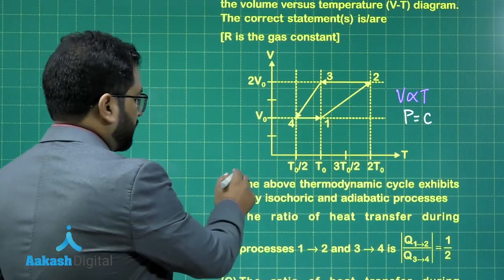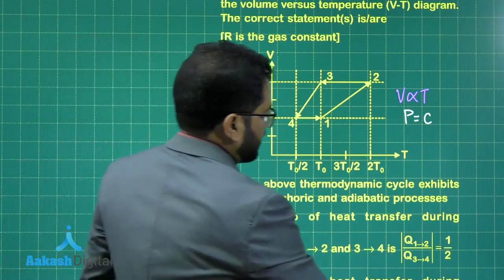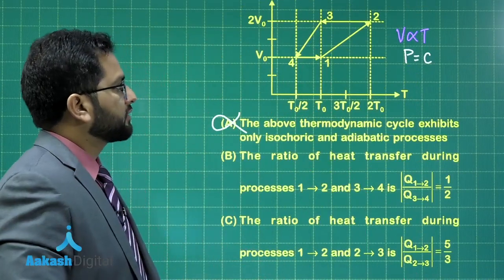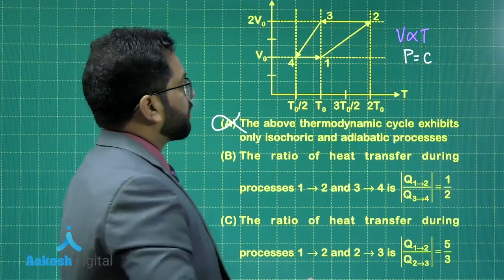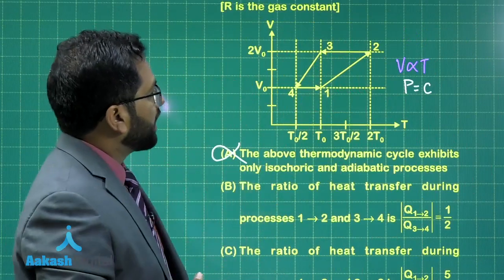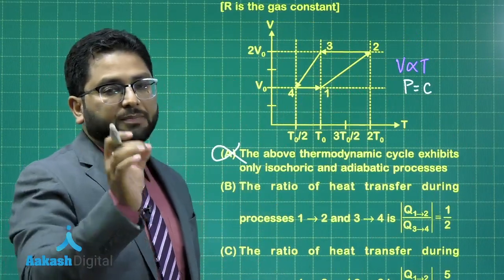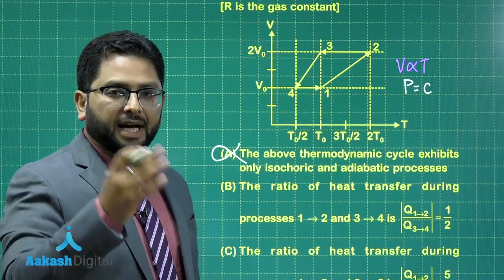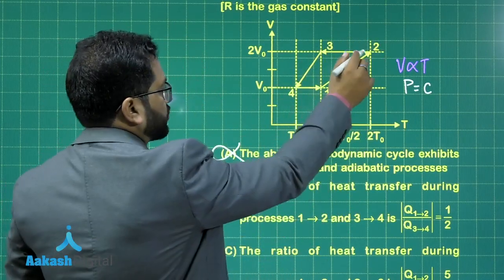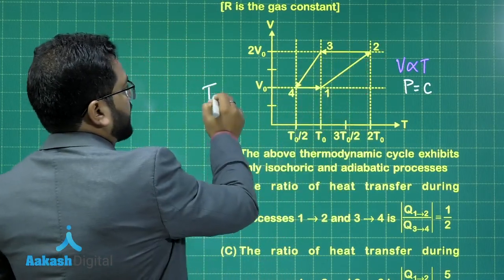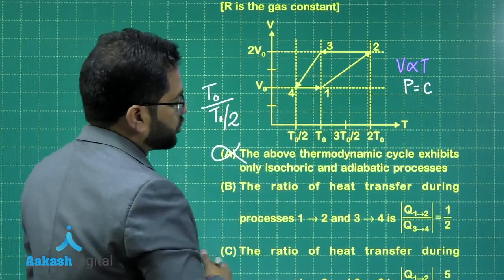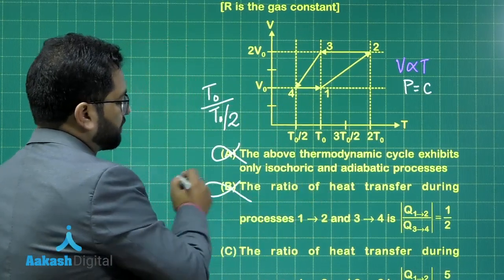Therefore, option number 1 would be incorrect. Now, the ratio of heat transfer during process 1→2 and 3→4 — both are isobaric processes and the expression would be NCP·ΔT. All I need to do is calculate the ratio of change in temperature: ΔT for 1→2 is T₀, and ΔT for 3→4 is T₀/2. So the ratio of heat has to be 2:1, while the option states 1:2. So option B would be incorrect.